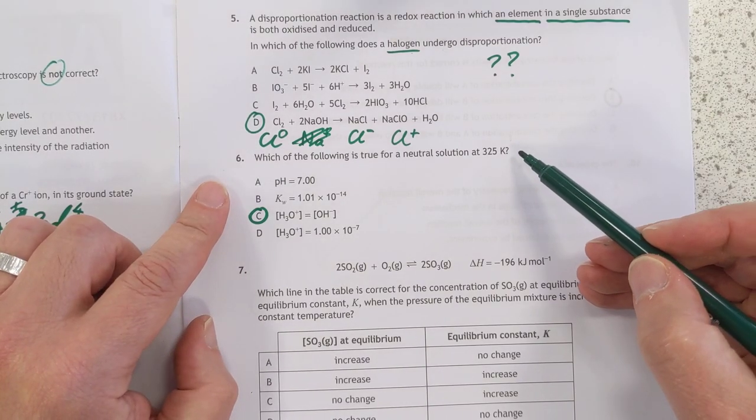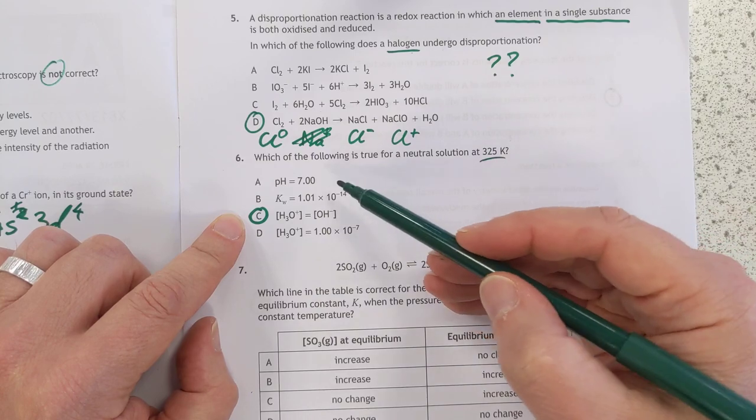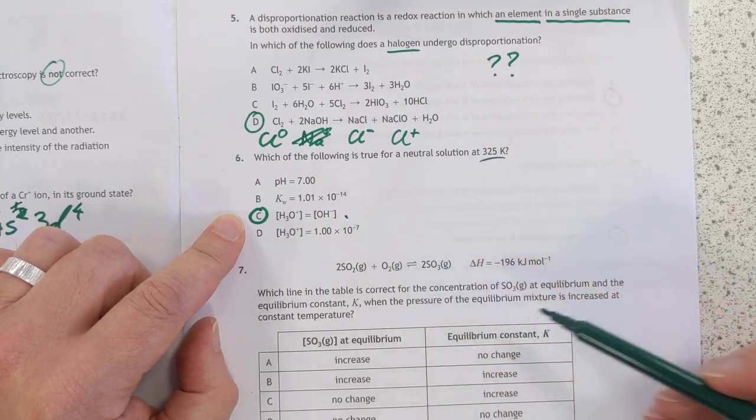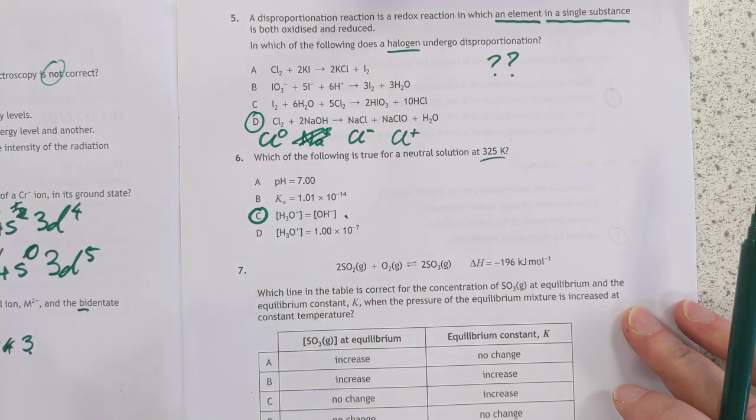The only one that's true for neutral solutions at 325 Kelvin. Anyway, that's for sure. None of the others will apply, but this one always applies for neutral solutions. Same number of hydroniums as hydroxides.